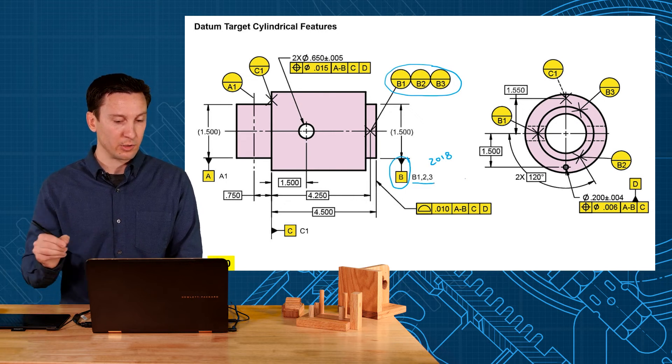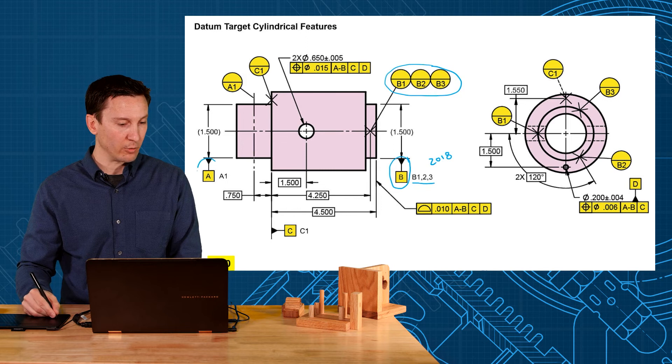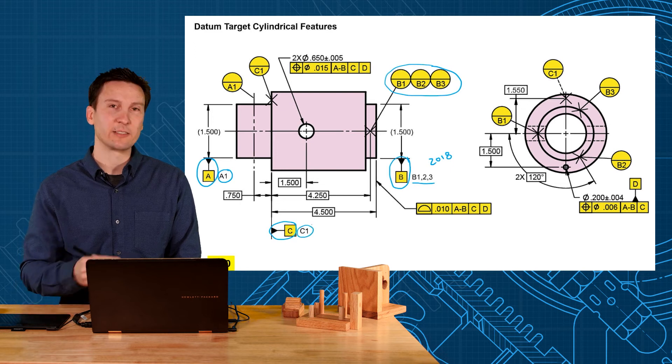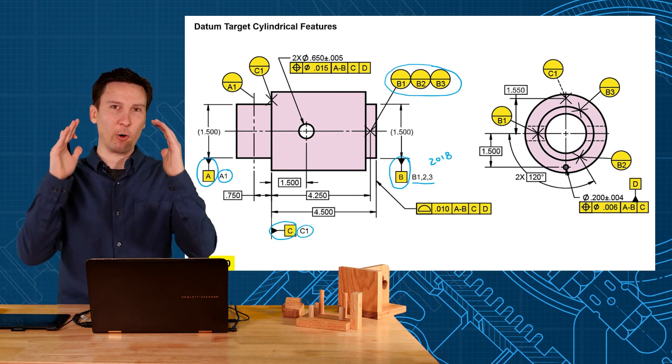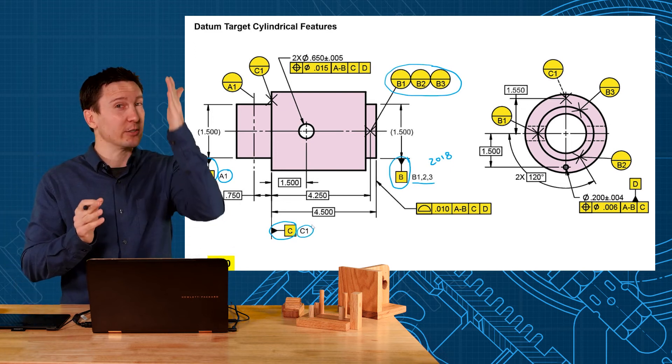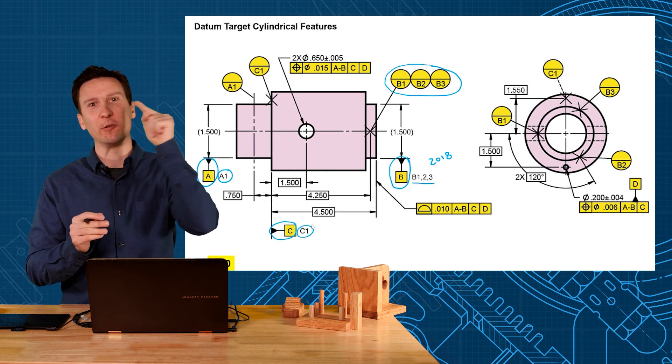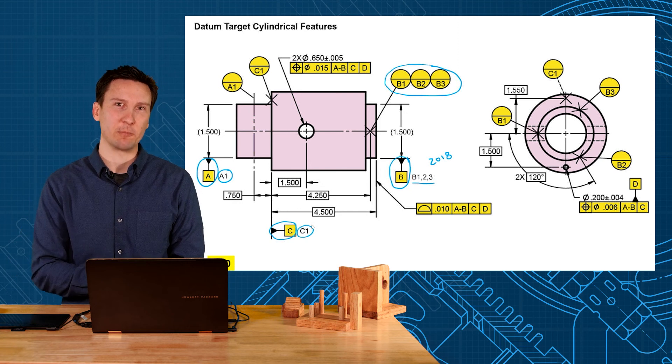So this would be the B1,2,3. The A over here is established by a single A1 target, and then C is established by a C1 target. So that's a nice clarification that's now a reference that it's not the entire datum feature, but it's only a target at the point. And you have to find that target by looking on the drawing for that datum target symbol.